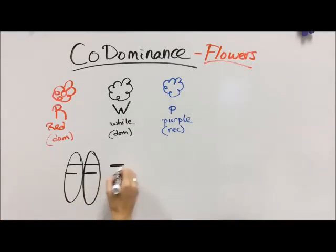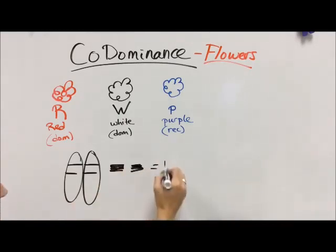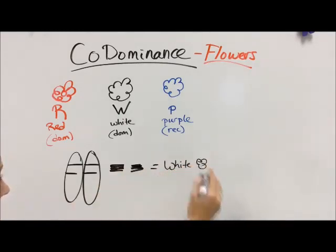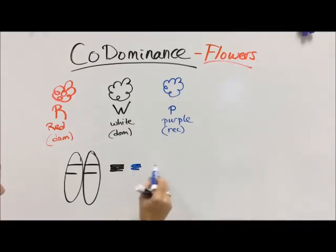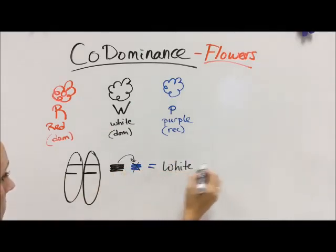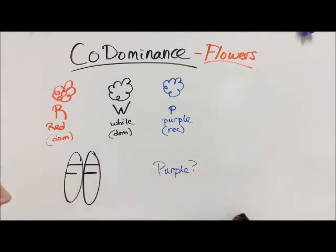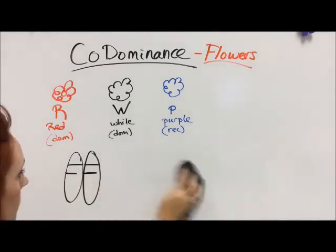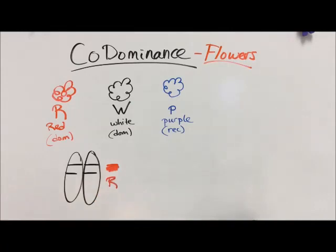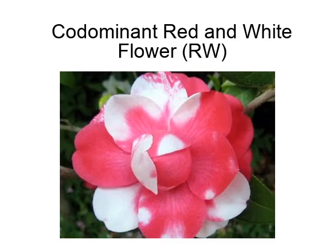If I have two white alleles, I get a white flower. A white and a purple — the white covers up the purple, so I get a white flower hiding the purple information. If I want a purple flower, I need two purple alleles, because it's recessive. But if I get a red and a white allele, I get a co-dominant flower with red and white patches, because both alleles are dominant.